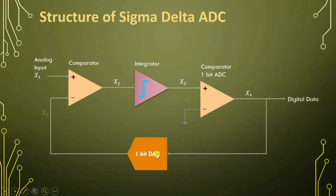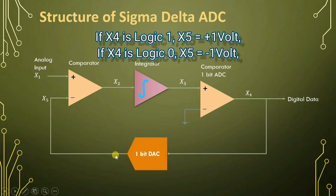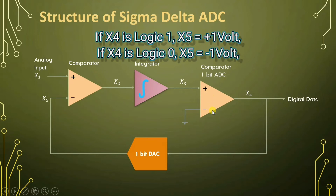In the feedback path, we have a one-bit digital to analog converter that generates the X5 output. If the input is logic 1, it generates plus 1 voltage at X5. If the input is logic 0, the output will be minus 1 voltage at X5. That is how the complete circuit is structured.